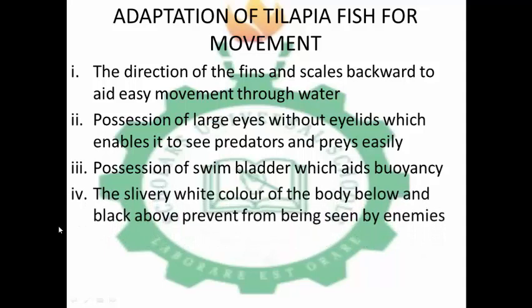The silver-white color of the body below and the dark black color above both prevent the fish from being seen by enemies. The silver-white color below makes it blend with the sky when viewed from below, while the dark color on top blends with the dark appearance of the sea when viewed from above — preventing enemies from detecting it from both below and above.